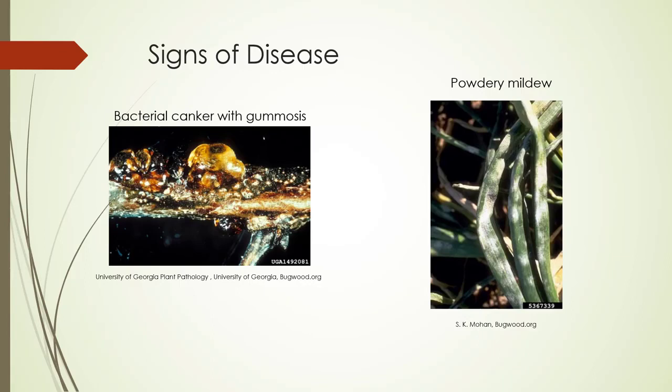Here we have bacterial canker with gummosis. The gummosis is the sign. Powdery mildew is a fungus, and so the fruiting bodies for that are the sign.